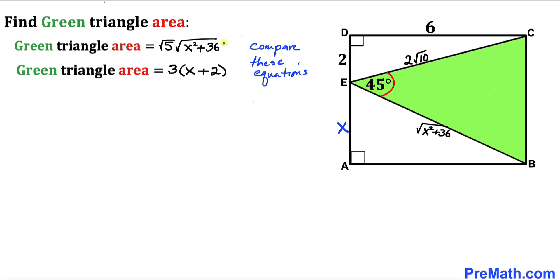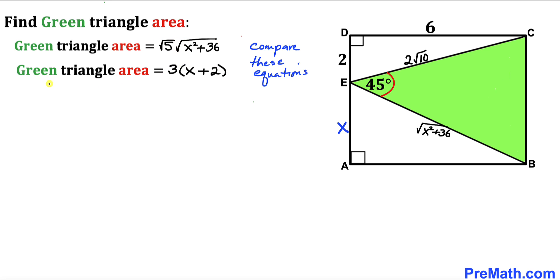We now have two expressions for the area of the green triangle: 3(x + 2) and √5 · √(x² + 36). Since both equal the same area, we can equate the right-hand sides: 3(x + 2) equals √5 · √(x² + 36).